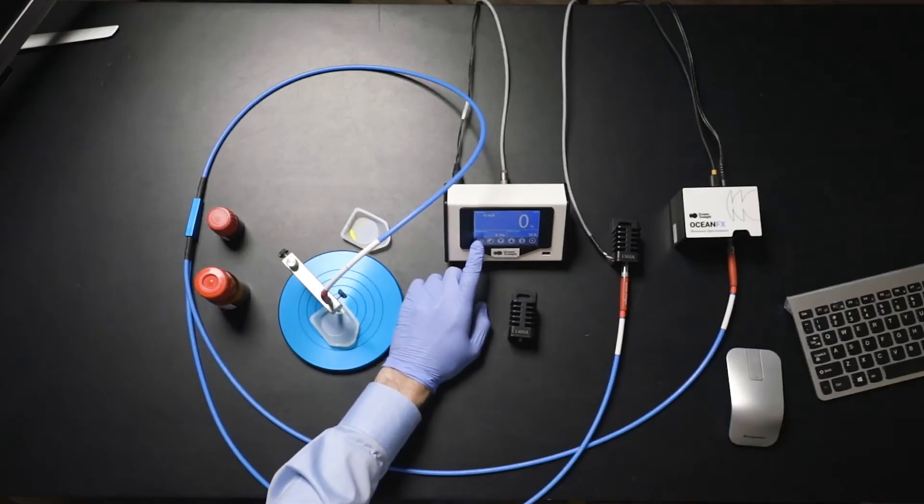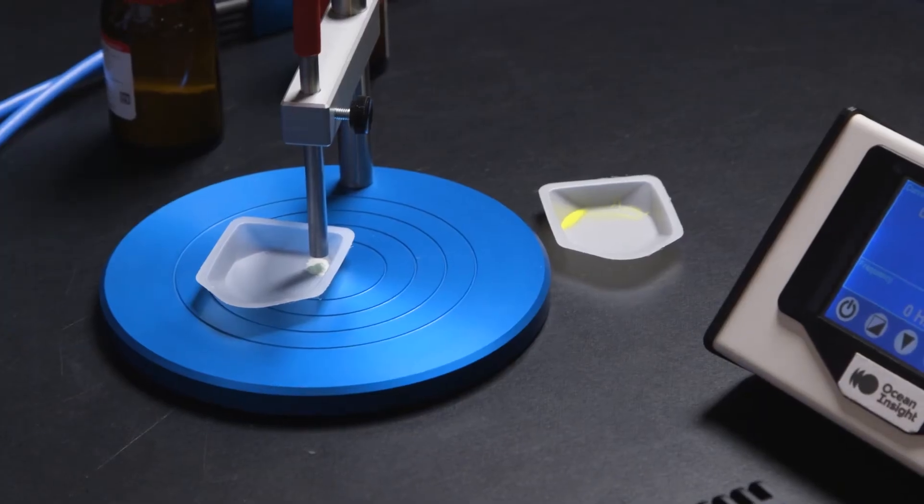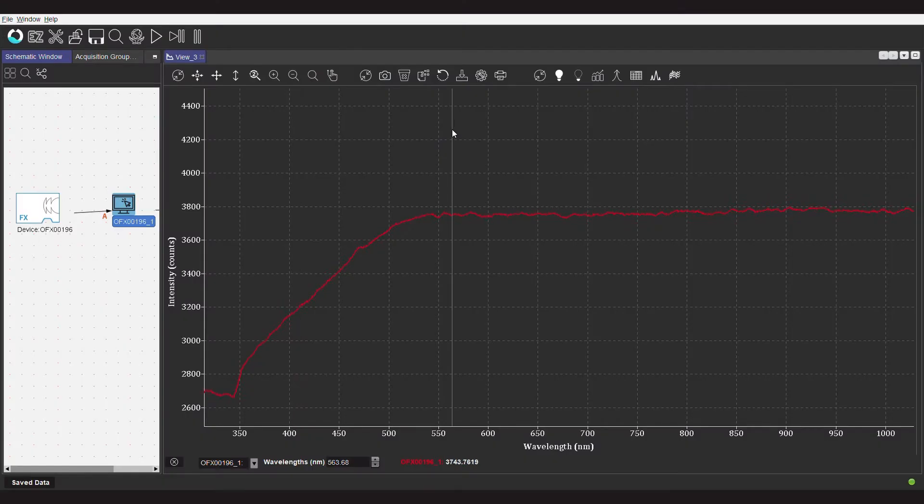If we turn off the LED, that phosphorescence signal is going to decay down to nothing. We can see that in the software, we're not getting any emission anymore. Versus if we have the LED on, we get emission, and this one is actually a little lower in terms of its emission wavelength. We're down at 535 nanometers for that green signal.